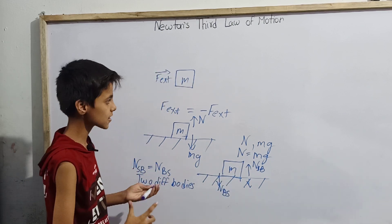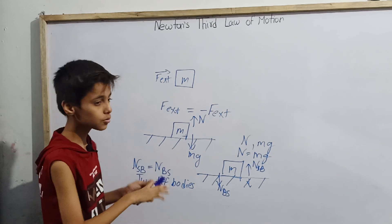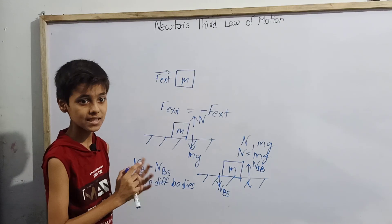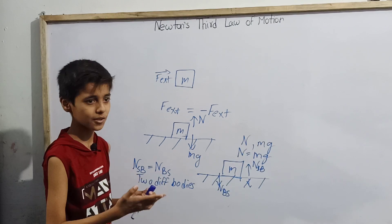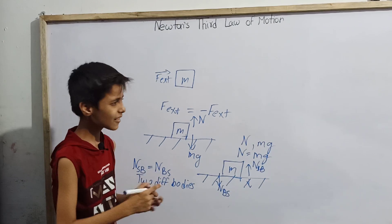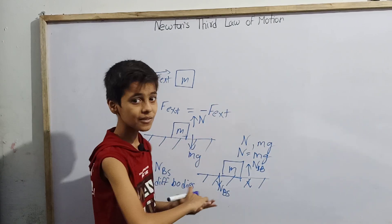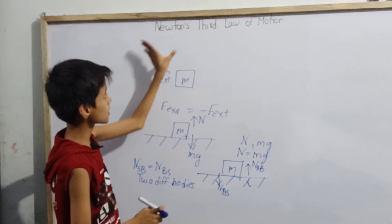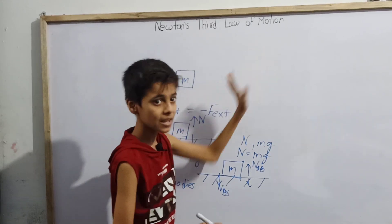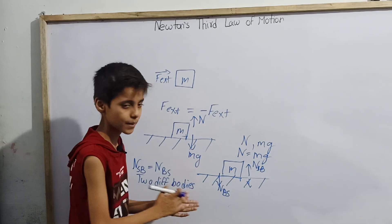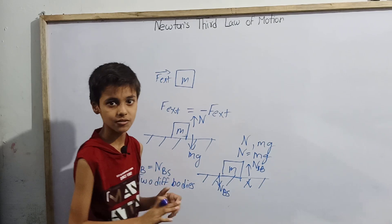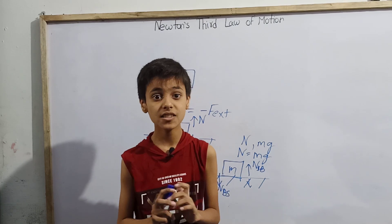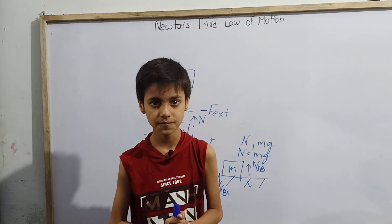Other examples of action-reaction forces include tension — if we have two kinds of tension in any string, those are action-reaction forces. And centrifugal force and centripetal force — whenever they follow the three conditions of Newton's third law of motion, we can say those pairs of forces are action-reaction forces. So this was my today's topic. If you haven't subscribed to this channel, please subscribe. Thank you.